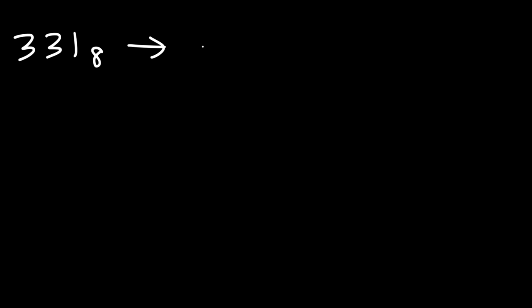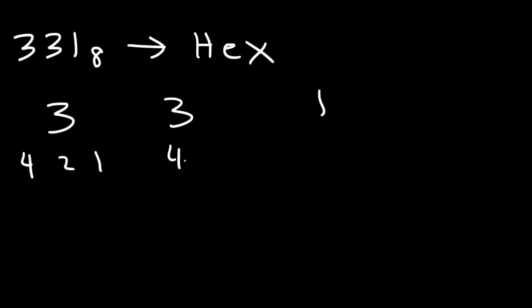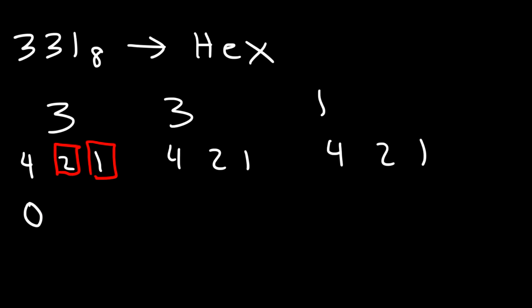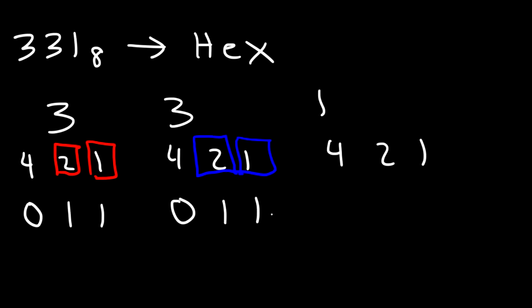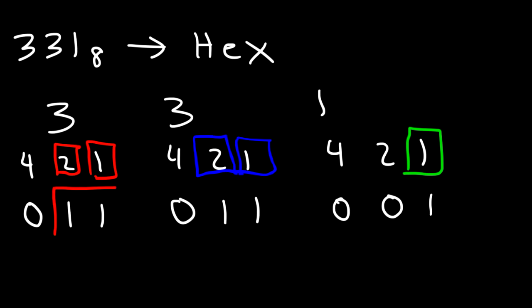Now let's try another example: 331 base 8 into a hexadecimal number. Feel free to pause the video if you want to try it. So let's separate each number into three parts. To get 3, we need to add up 2 and 1 — so we didn't use the 4, replace that with 0, and replace the 2 and 1 with 1. We have another 3, so same binary equivalent: 0, 1, 1. For the last digit, it's just a 1, so we only use the 1 and replace 4 and 2 with 0. So 331 in the octal system corresponds to 011 011 001 in binary.